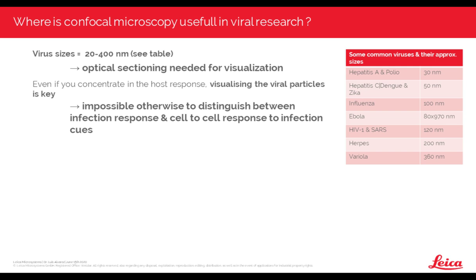One thing that is really nice with the confocal microscope is that you have optical sectioning, and virus sizes range from around 20 to 400 nanometers. Without this optical sectioning, it is quite difficult to resolve them. You can see the sizes of some common viruses. Today I will concentrate on HIV, which has an approximate size of about 120 nanometers. Even if you're concentrating on the host response to the viral infection, it is still suitable to look at the viruses, because otherwise it's almost impossible to differentiate the biological response from cell-to-cell communication versus the actual infection process.